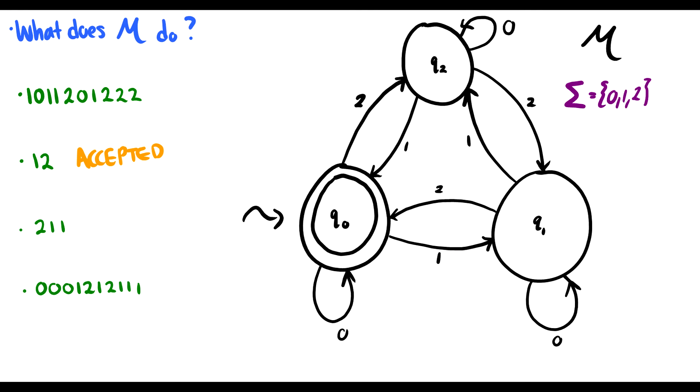Let's do 2, 1, 1, because that's a small one as well. 2, 1, 1. We start at Q0. 2 takes us to Q2. 1 takes us back to Q0. And then 1 takes us to Q1. So this string is rejected because we ended up in Q1, which is not an accept state.